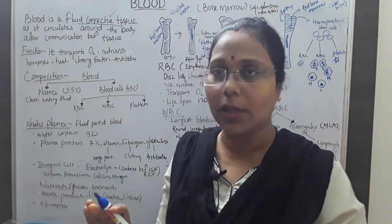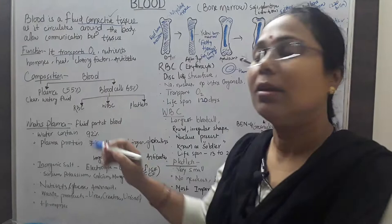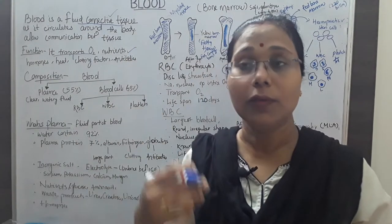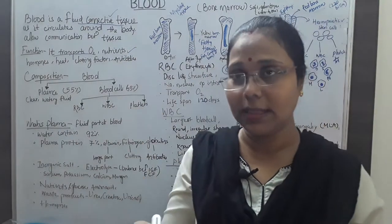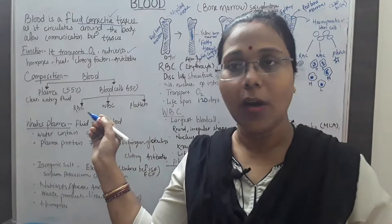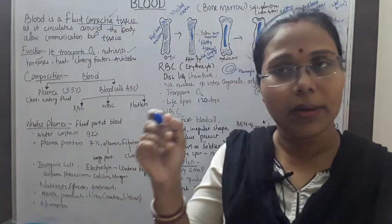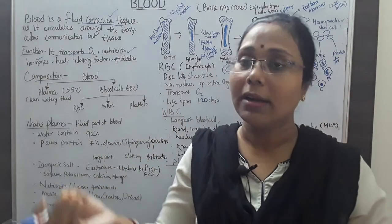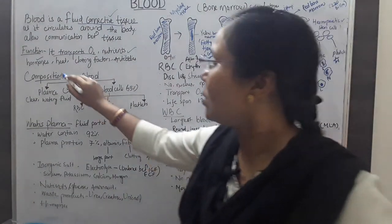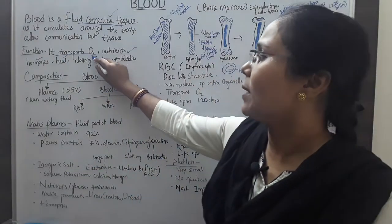The functions of blood include: transporting oxygen from the lungs to different parts of the body; carrying nutrients from the alimentary canal to tissues and organs after digestion; transporting hormones secreted by endocrine glands to their target organs; and also regulating body heat — body temperature is also controlled by blood.